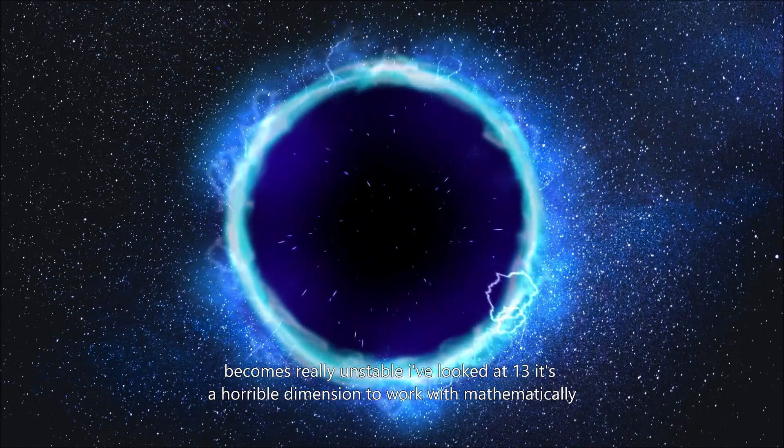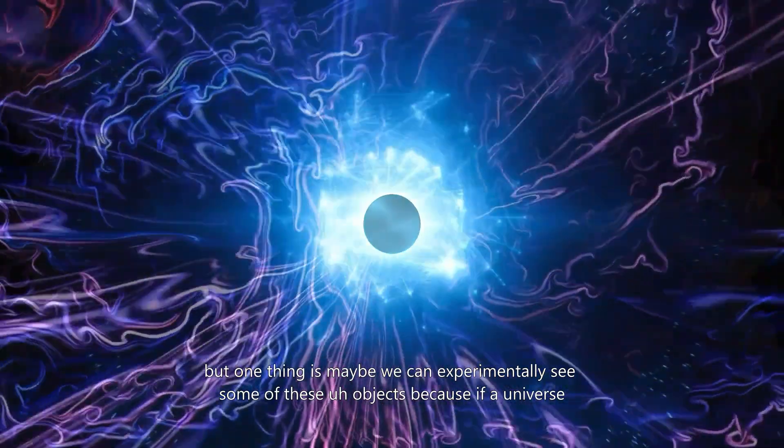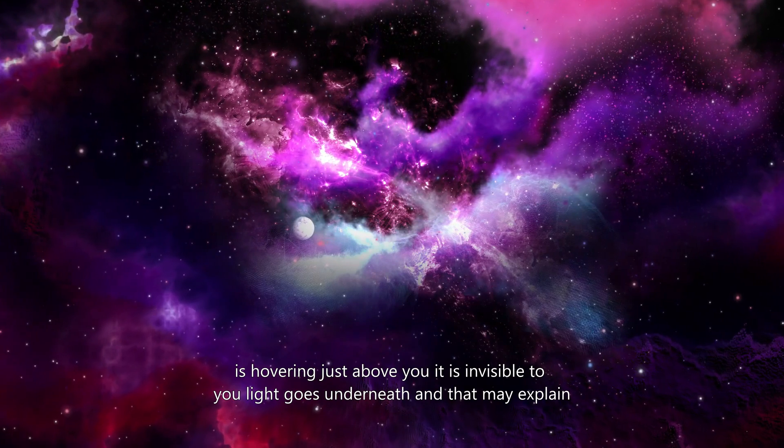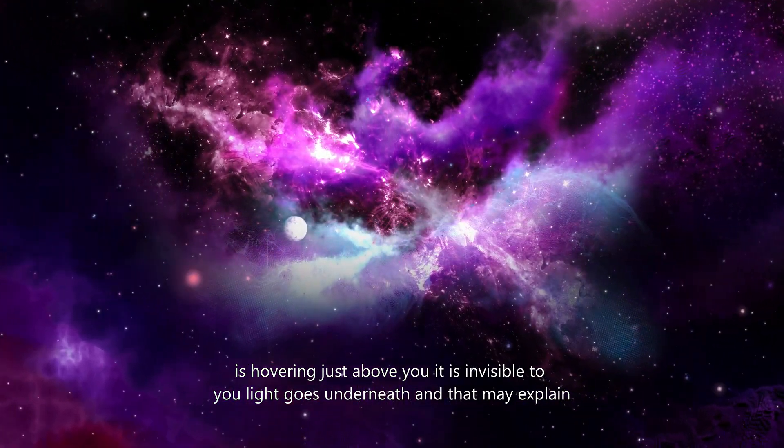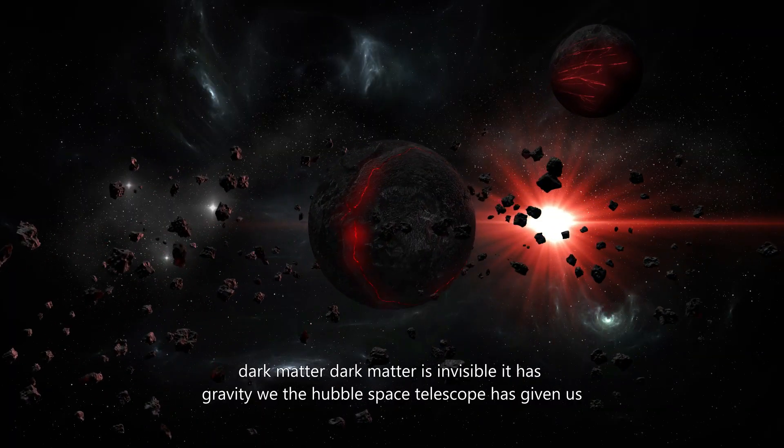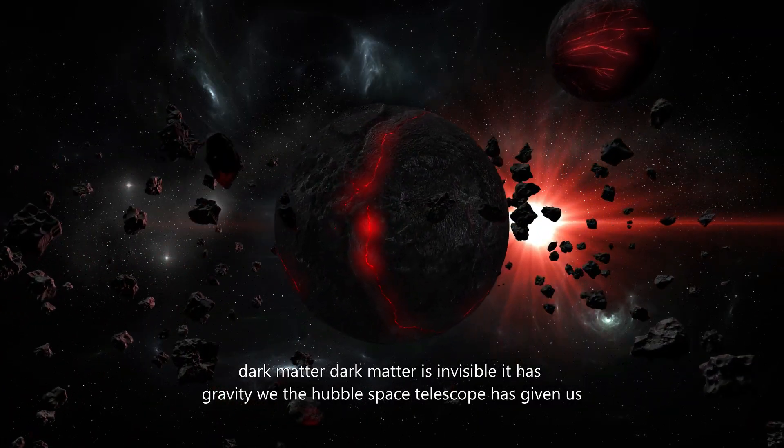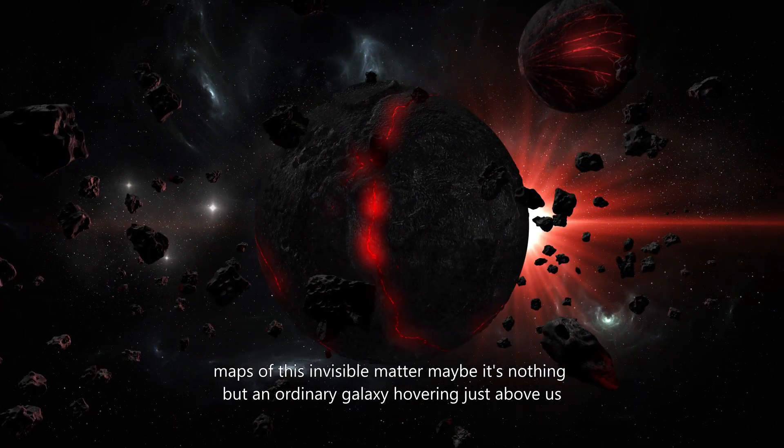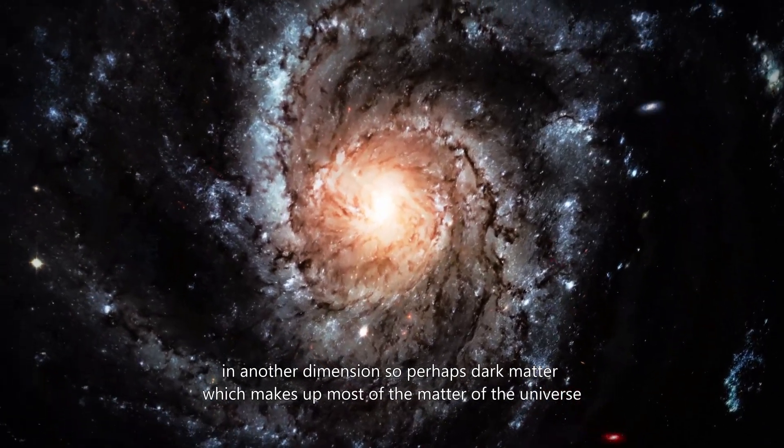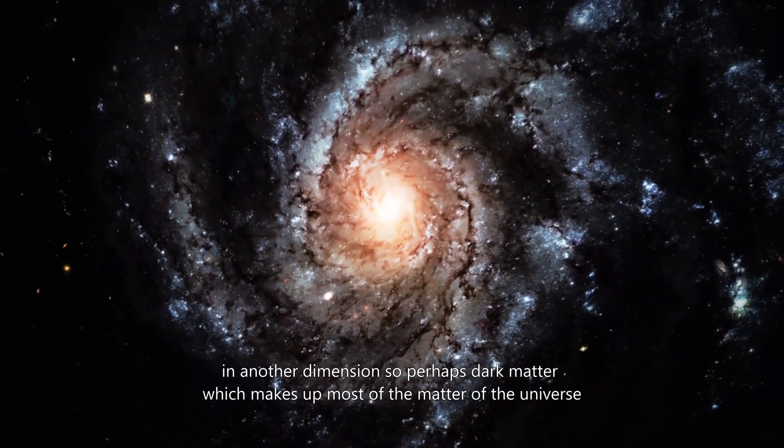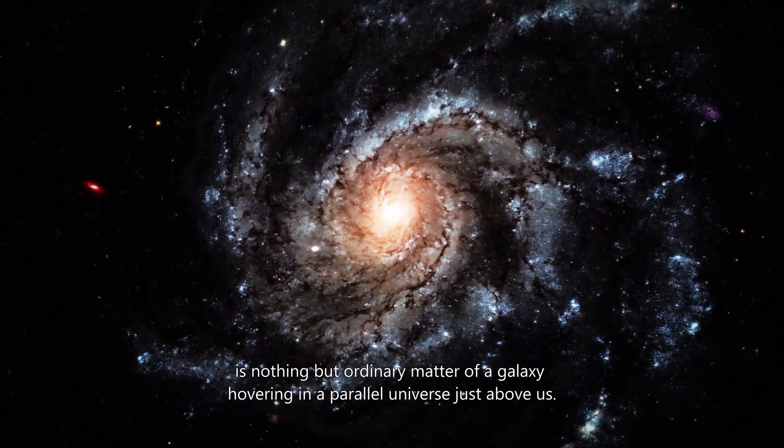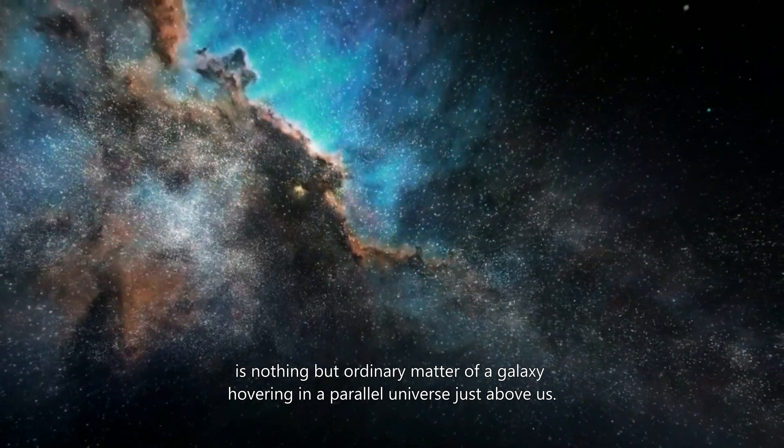But one thing is maybe we can experimentally see some of these objects. Because if the universe is hovering just above you, it is invisible to you. Light goes underneath. And that may explain dark matter. Dark matter is invisible. It has gravity. The Hubble Space Telescope has given us maps of this invisible matter. Maybe it's nothing but an ordinary galaxy hovering just above us in another dimension. So perhaps dark matter, which makes up most of the matter of the universe, is nothing but ordinary matter of a galaxy hovering in a parallel universe just above us.